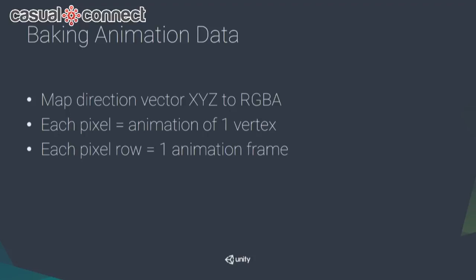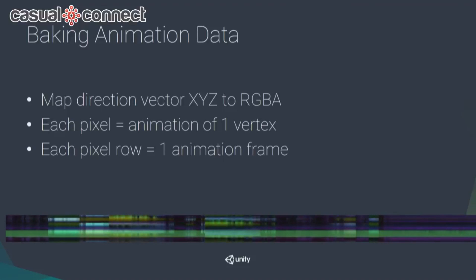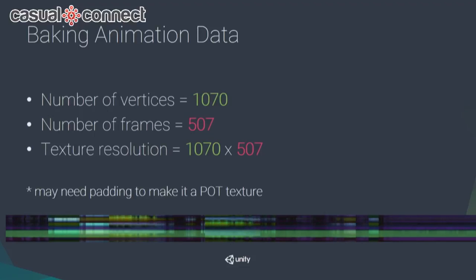Each pixel represents the animation of one vertex, and each pixel row equals one animation frame. So if you have 1,070 vertices in your mesh and 507 frames in your animation, your texture resolution is 1,070 by 507. You'd need to apply padding to make it a power-of-2 texture, but for simplicity I'll keep it as a non-power-of-2 texture here.